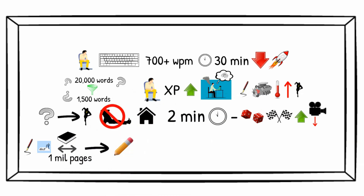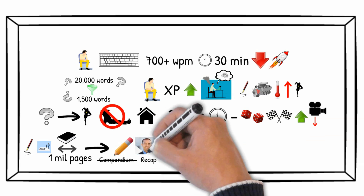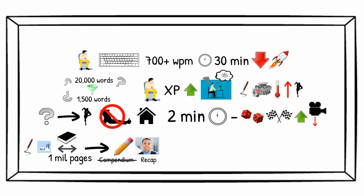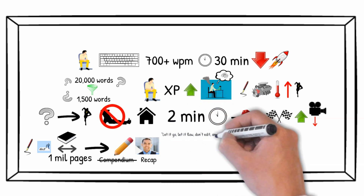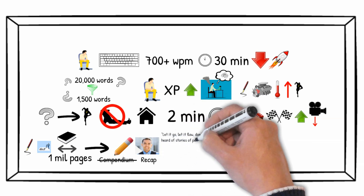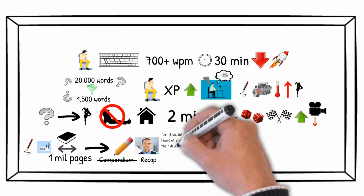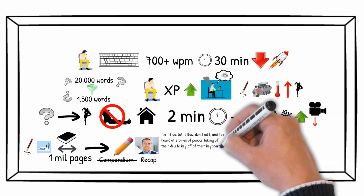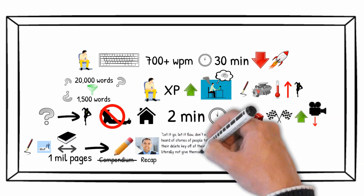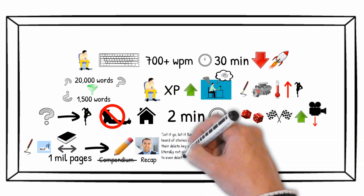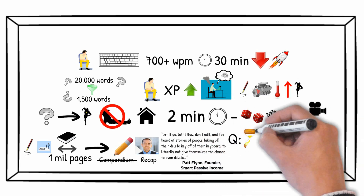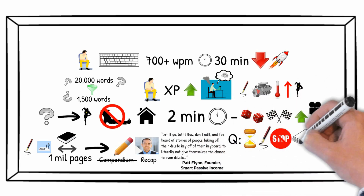Removing paragraphs, sentences, changing longer words for shorter ones, etc. Here's how Pat Flynn puts it in his interview at the podcast Authors Who Lead: 'Let it go. Let it flow. Don't edit. And I've heard of stories of people taking off their delete key off of their keyboard to literally not give themselves the chance to even delete.' How long will you write without deleting in your next content piece?